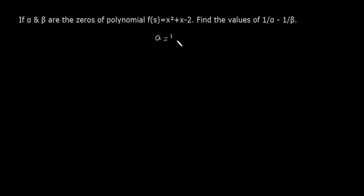Yahaan per a hai 1, b hai 1, c hai minus 2. Aur alpha plus beta minus b by a, alpha beta c by a, minus 1 by 1 to minus 1, c by is minus 2 by 1 to minus 2.